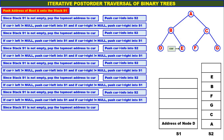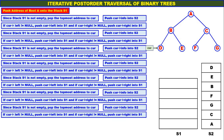Stack S1 is not empty — we still have address of node D. Pop the topmost address to CUR. Topmost address is address of node D — pop it and assign to CUR. Push CUR info into S2, so D is pushed onto stack S2. There is no left child for D — it is null, so there is no push. There is no right child for D — it is null, so there is no push.